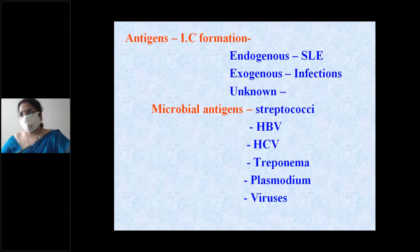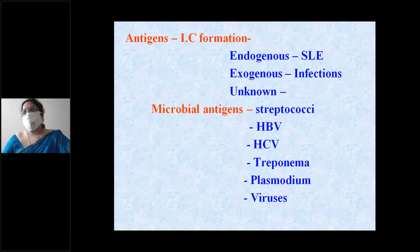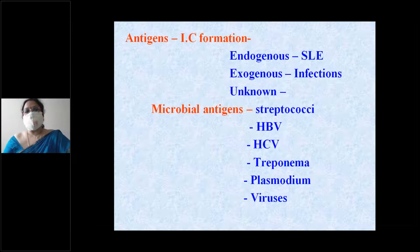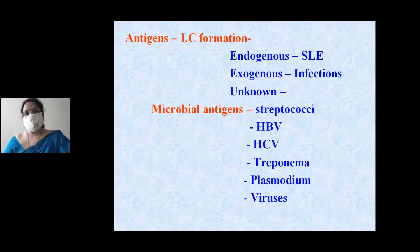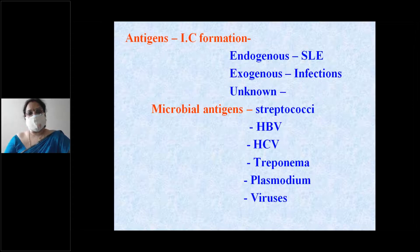Antigens can be exogenous — such as any infectious agent — or endogenous, as in systemic lupus erythematosus where DNA and nuclear proteins act as antigens leading to antibody formation. Microbial antigens include streptococci, hepatitis B virus, hepatitis C virus, Treponema pallidum, Plasmodium, and other viruses.